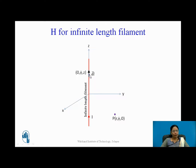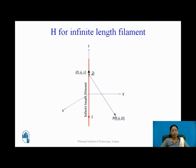The point on the filament where I consider the small length has coordinates (0, φ, z) — radius 0 because it lies on the z-axis, φ because the filament passes through that plane, and z at a certain height from the origin. Joining this point to point P, the arrow head points towards P since we want the field there. This distance is denoted as r-bar.